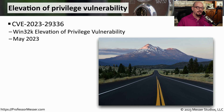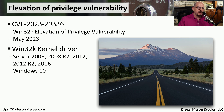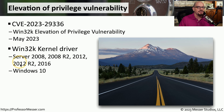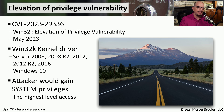Here's an example of a privilege escalation vulnerability: CVE-2023-29336. This is a Win32k elevation of privilege vulnerability announced in May of 2023. This vulnerability affected the Win32k kernel driver in Server 2008, 2008 R2, 2012, 2012 R2, and 2016, and it also affected Windows 10. If an attacker was able to take advantage of this vulnerability, they would be granted system privileges in the Windows operating system, which is the highest level of privilege you can have.